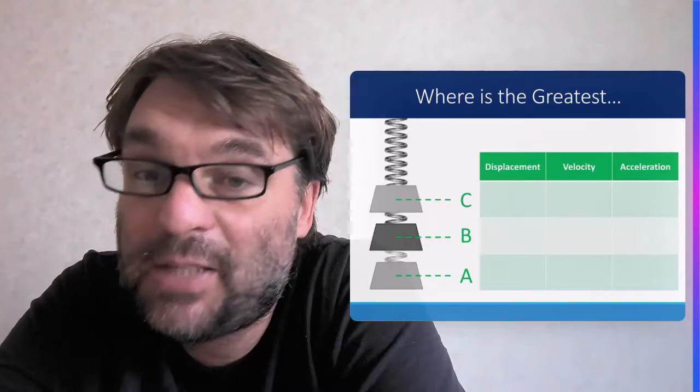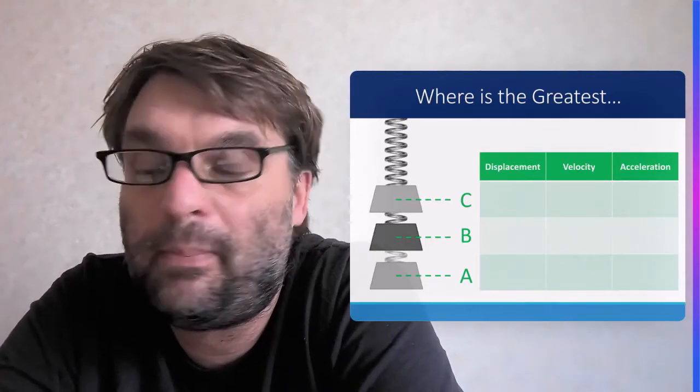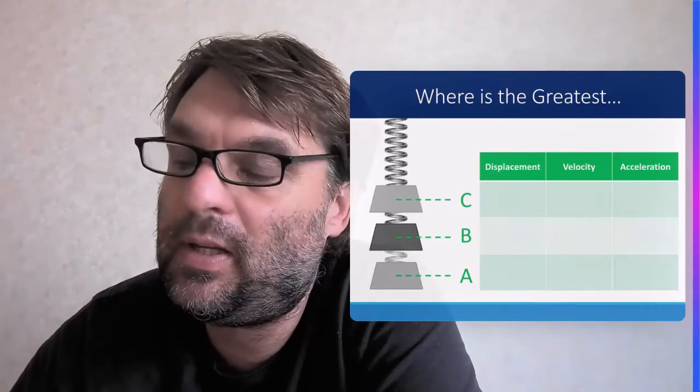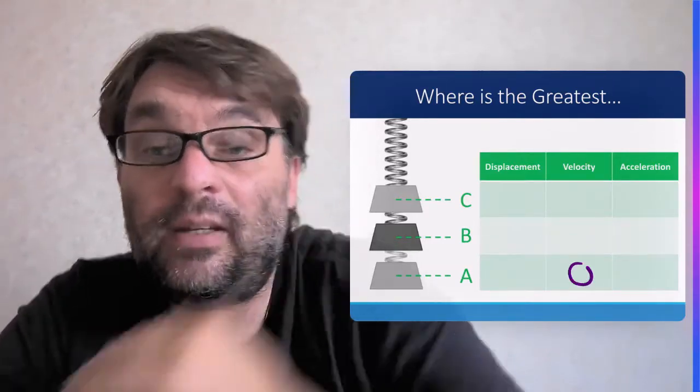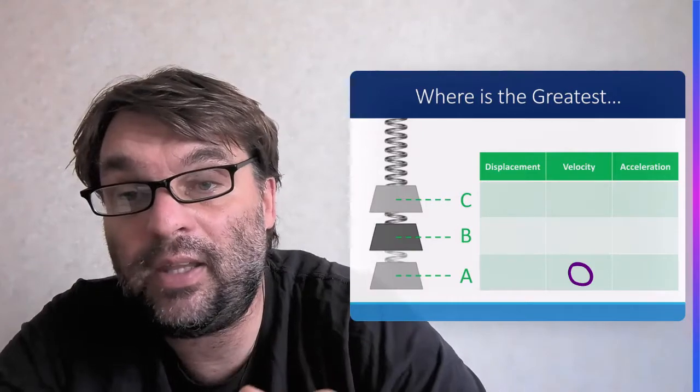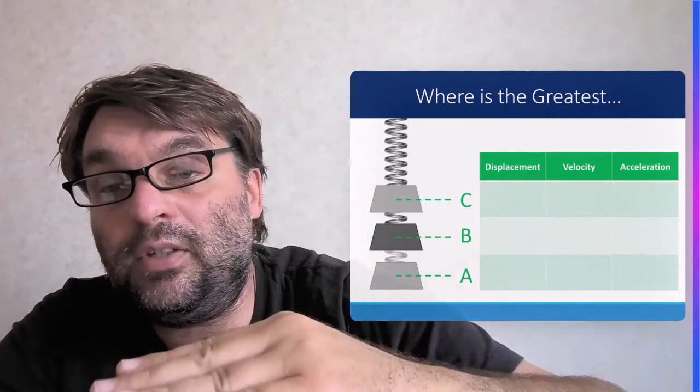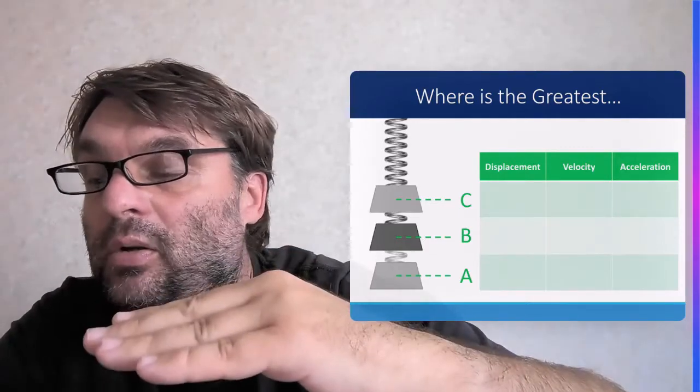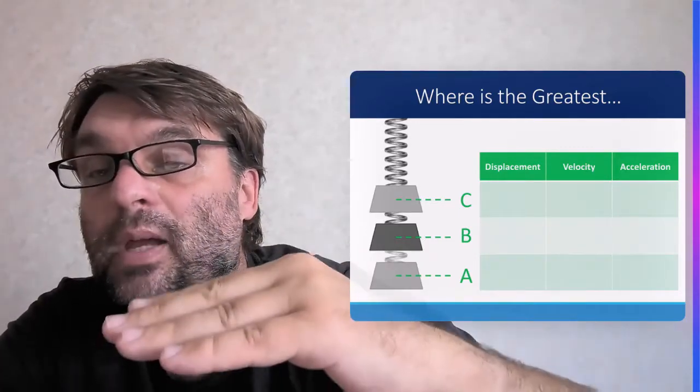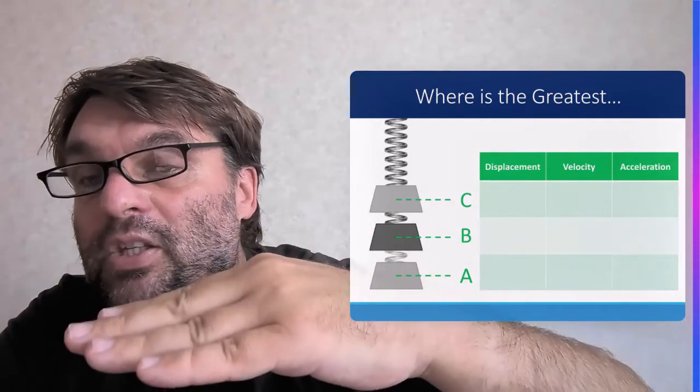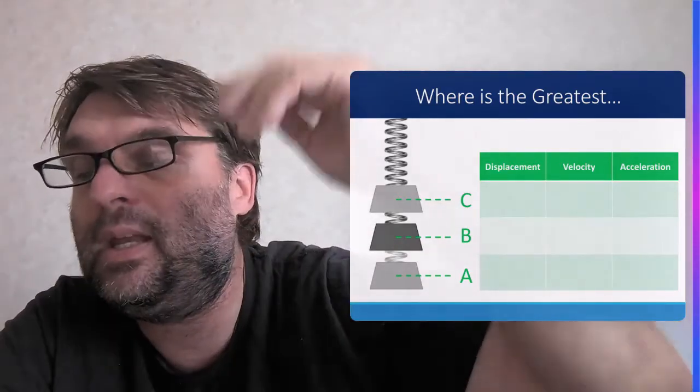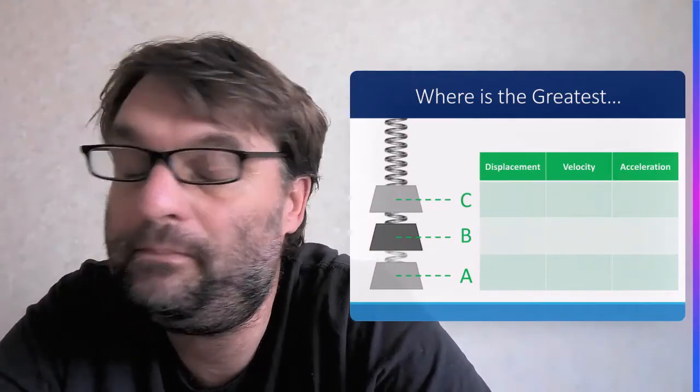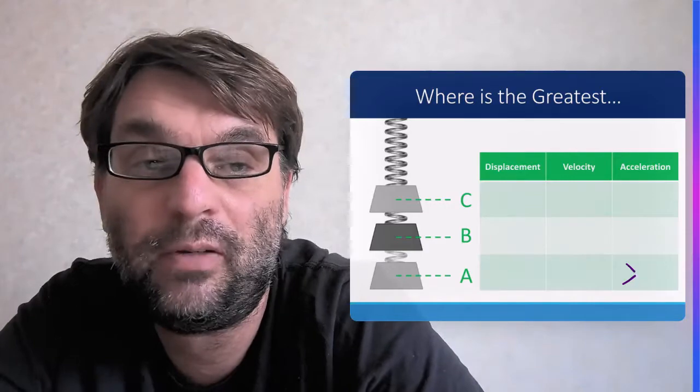And the displacement at the bottom will also be the maximum. This time, of course, it will be negative displacement. Velocity will be zero again. Maximum displacement at the bottom. Zero velocity at the bottom. It starts again. It begins to accelerate back up again. And the acceleration will be a positive acceleration. Maximum positive acceleration.